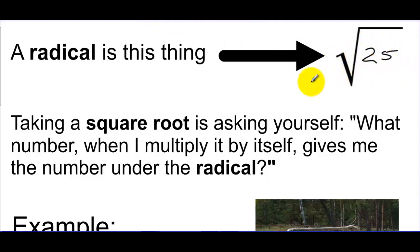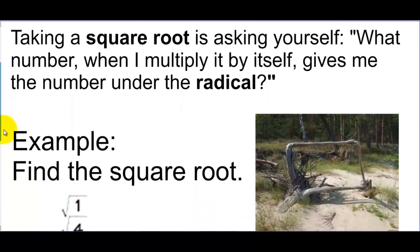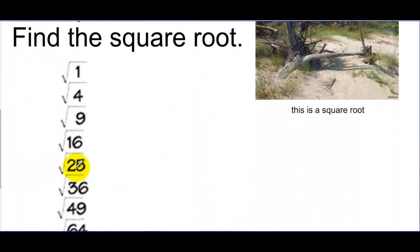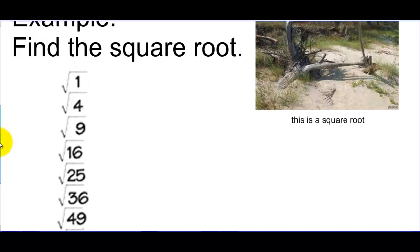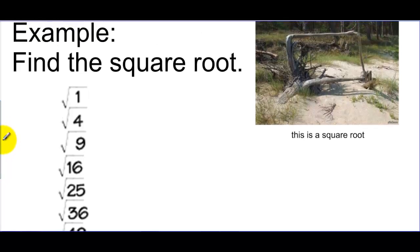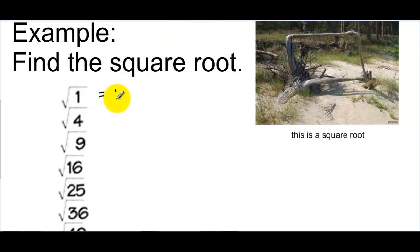In that case, the answer would obviously be 5. If you scroll down here, if I asked you to find the square root of this list of numbers, these are the numbers for which it's very easy to find the square root. For example, what number, when I multiply it by itself, gives me 1?